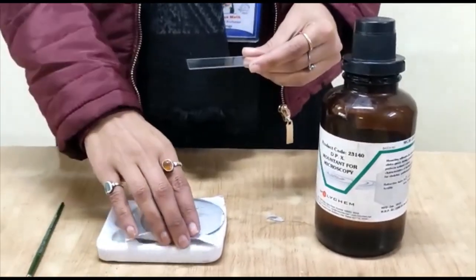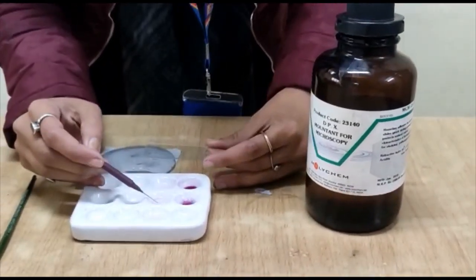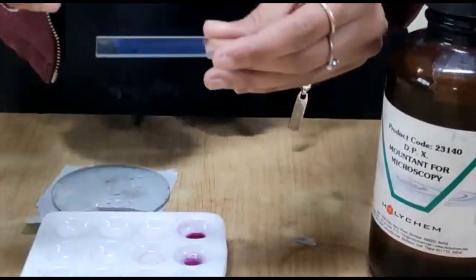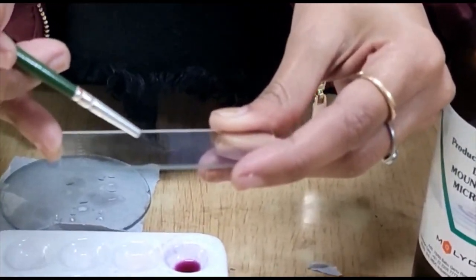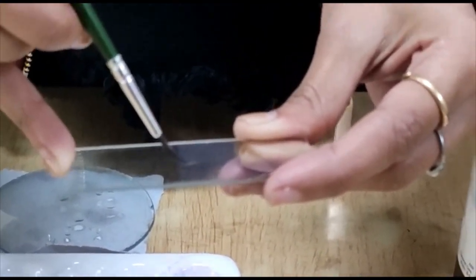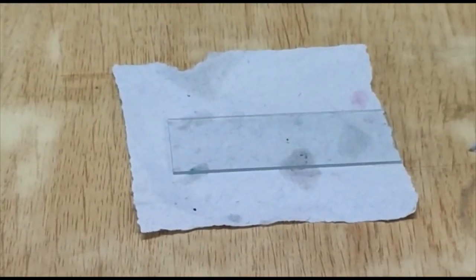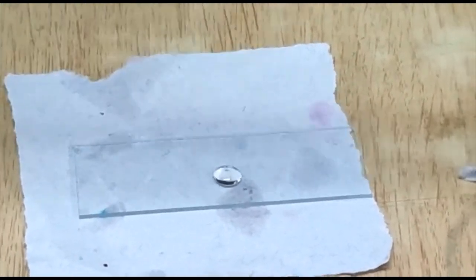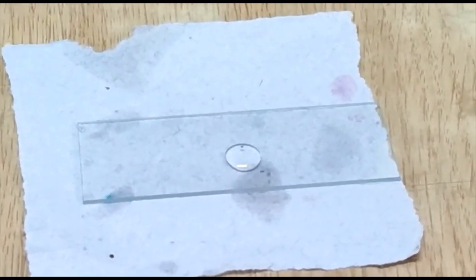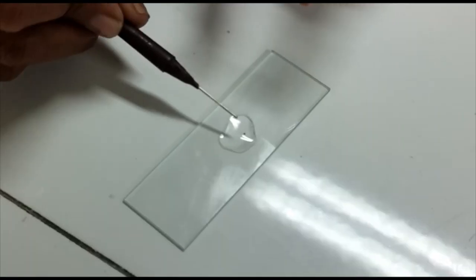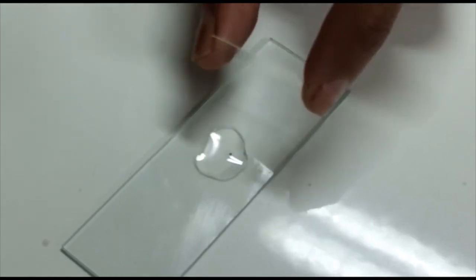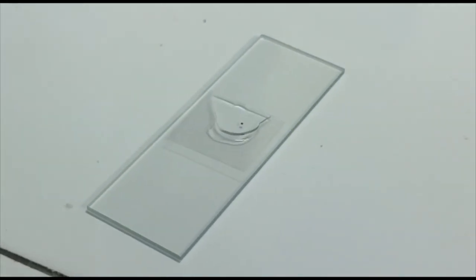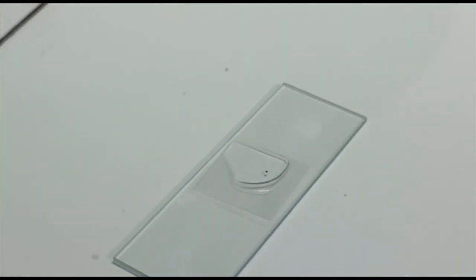Finally, we are going to take our gemmules onto a clear slide. Place them gently on the slide at the center of the slide with the help of the brush or needle. As you can see here, here is our gemmule. Now give a drop of DPX on it and finally place a cover slip. You need to take care that no air bubble is formed. Gently place the cover slip with the help of the needle. Now observe it under the microscope.